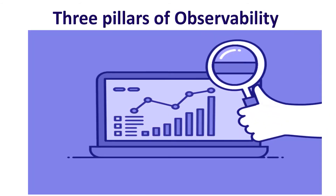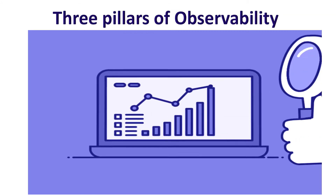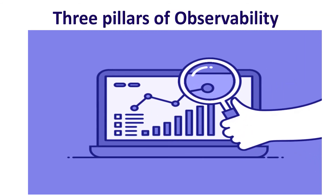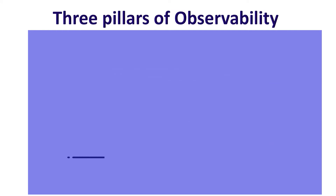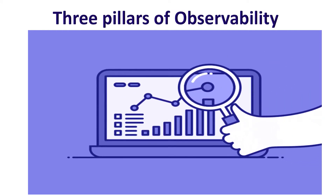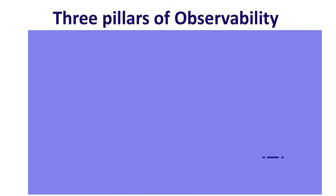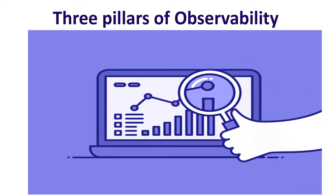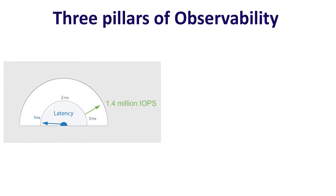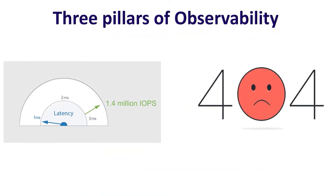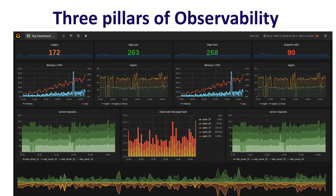The second pillar is metrics. A metric is a numerical value — like a percentile or average — measured over an interval of time, and includes specific attributes such as timestamp, name, KPI, and value. Metrics can track anything about your environment over time, from latency to error rates or user signups. Metrics provide an overall picture of your system; you can use them to assess the health of your environment at a glance, such as how quickly users are loading your website or the average memory consumption of your servers.